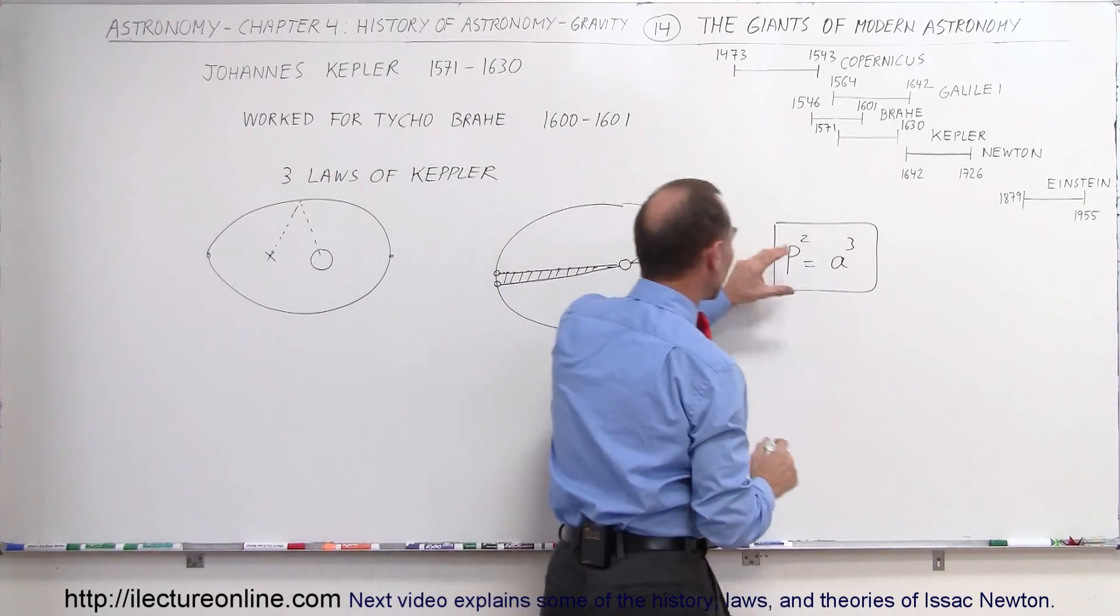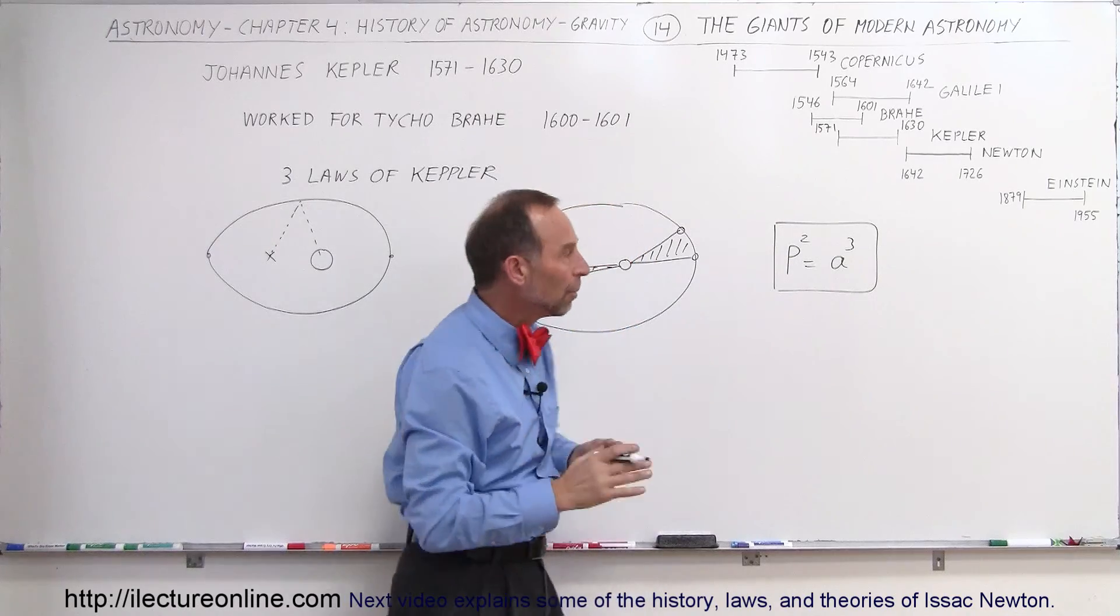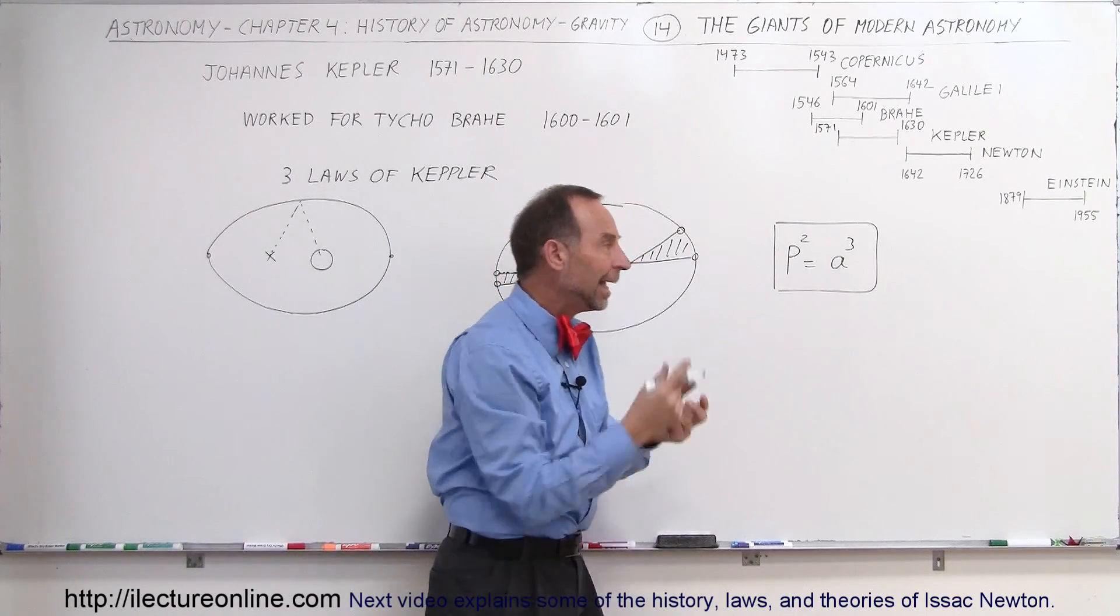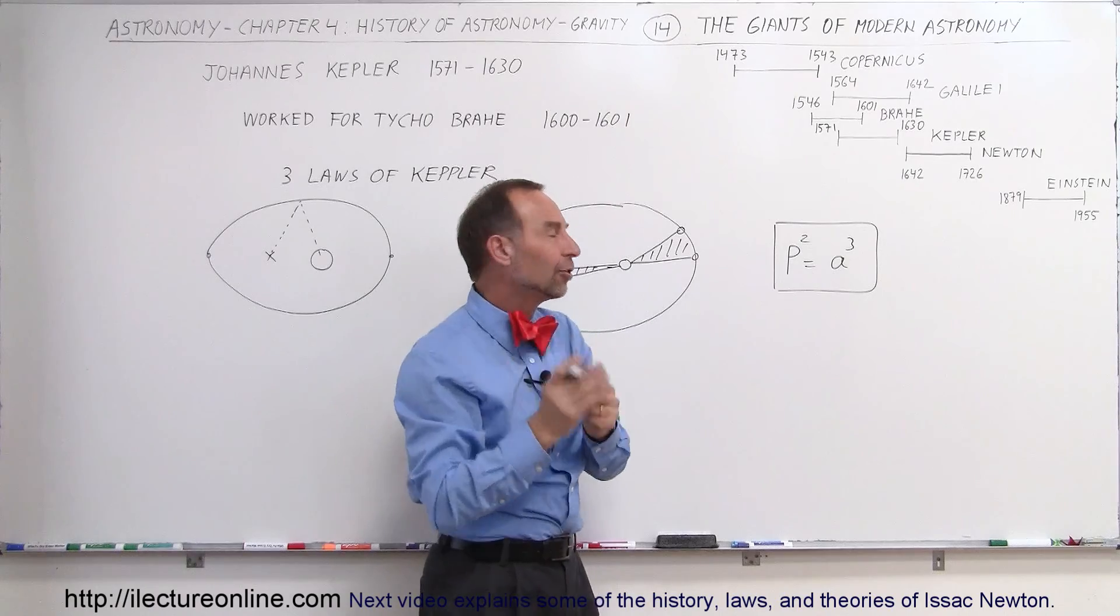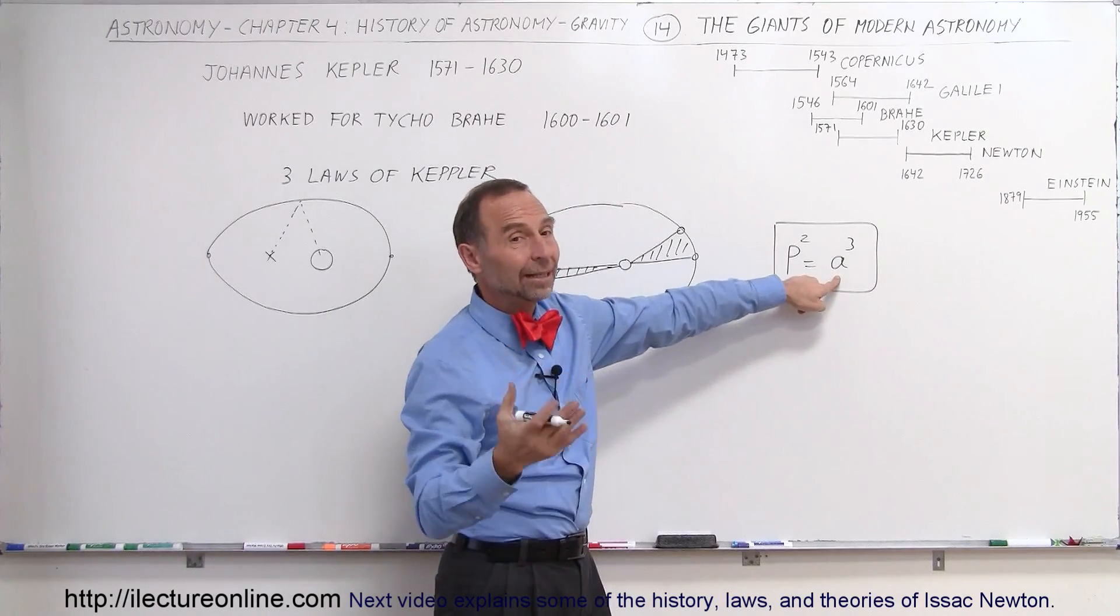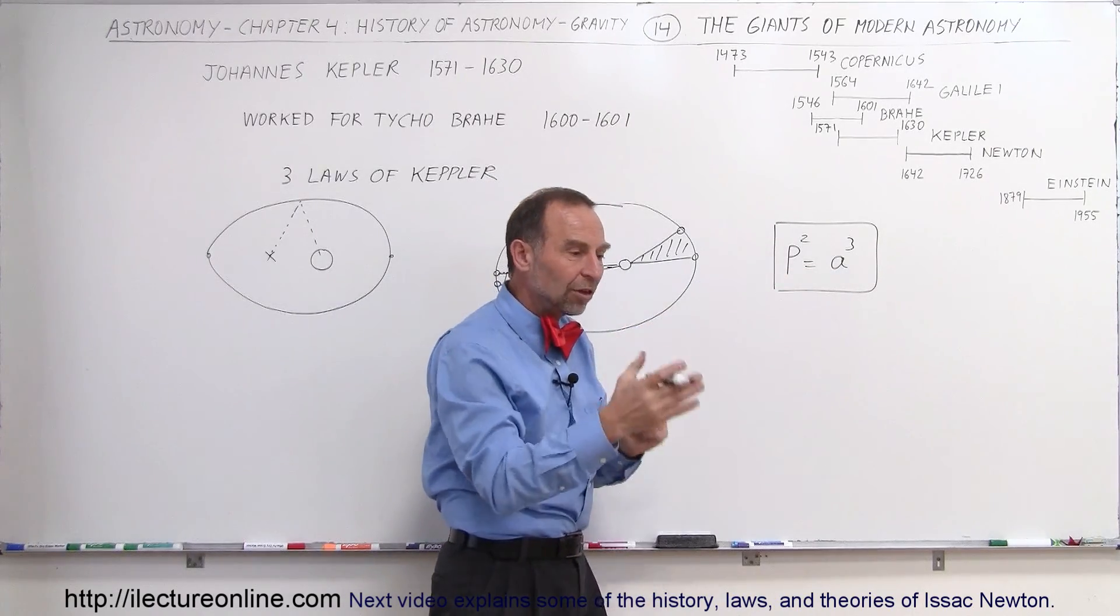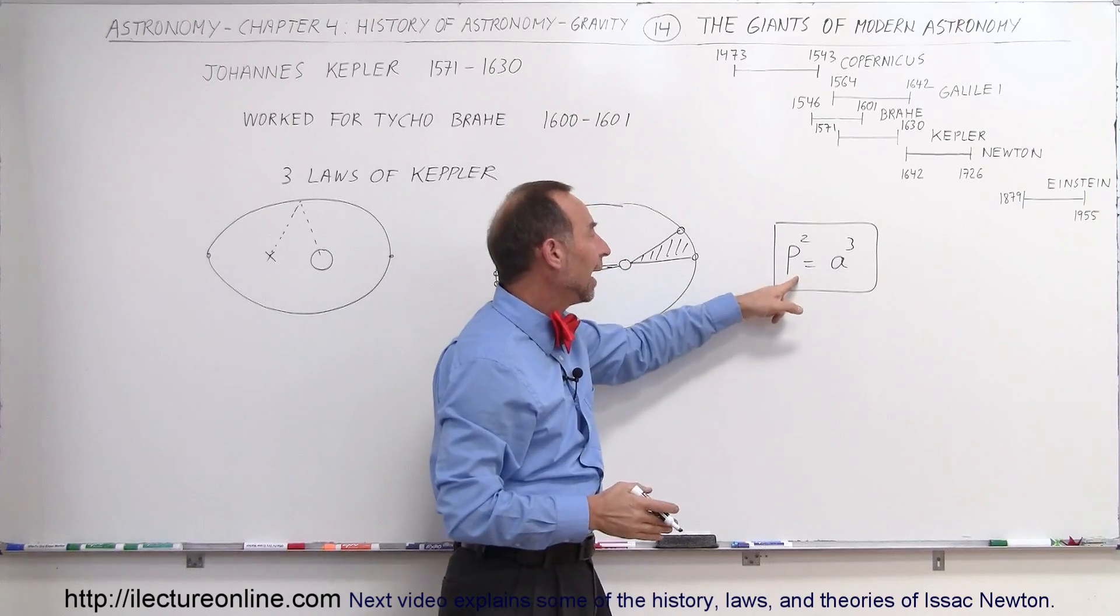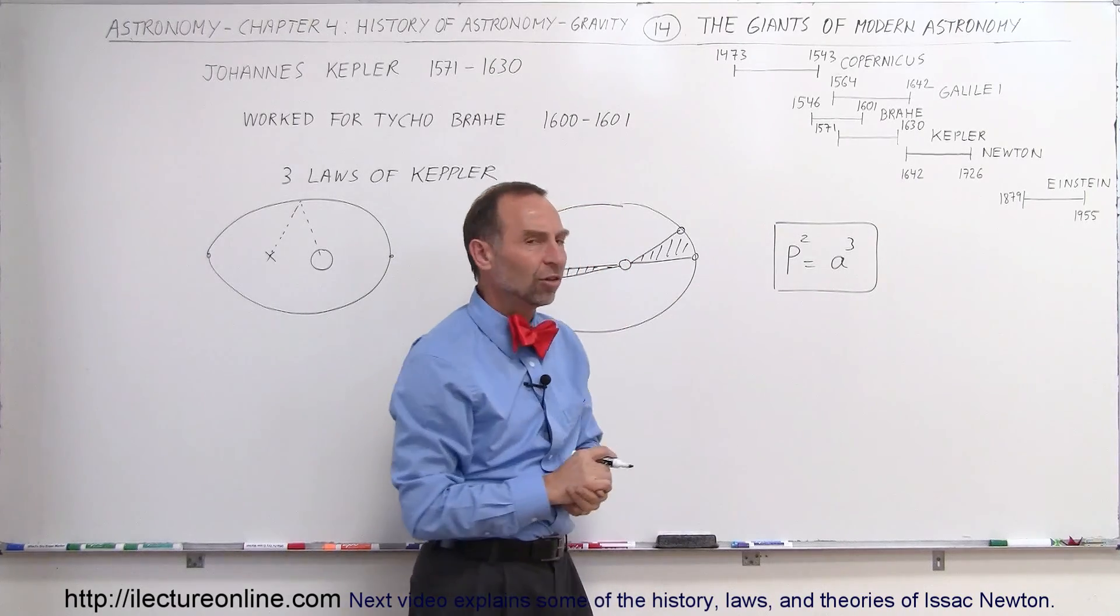And so this relationship was Kepler's third law. We have the first law, second law, and third law. He said the relationship between the time that it took for a planet to orbit the Sun and the distance to that Sun, if you thought of it in terms of, in this case, the distance in terms of the distance between the Earth and the Sun, and the period in years, that relationship existed.